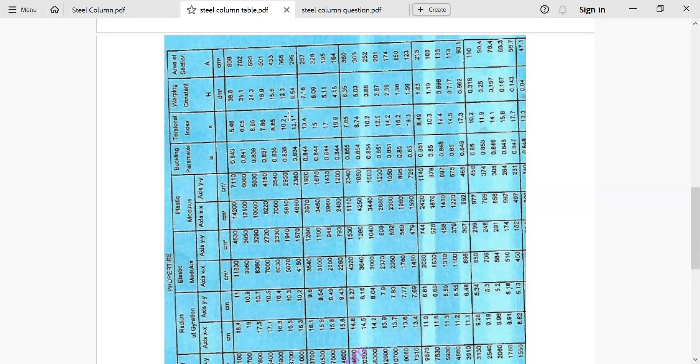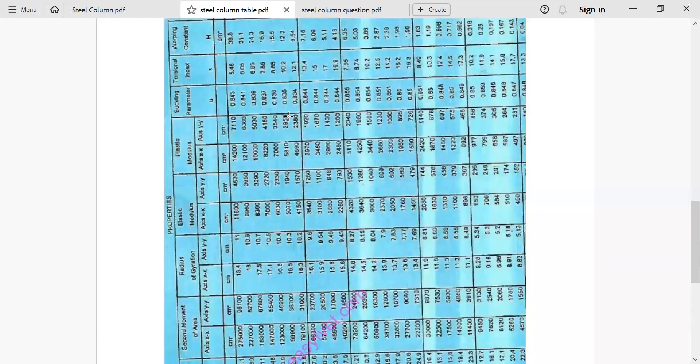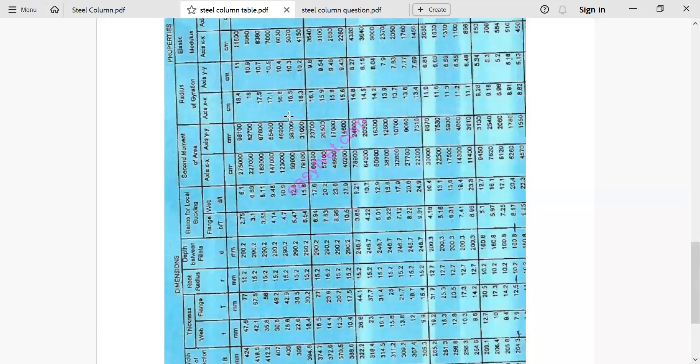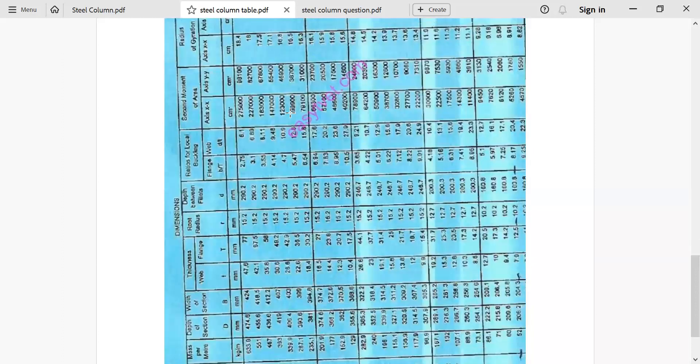One thing I want to advise you is this table has different values. You find area is given in terms of centimeter squared. But if you go to thickness of flange and web it's given in millimeters. So when you obtain the value from the table, ensure you carry its correct units so that during calculation, you can convert into uniform values.